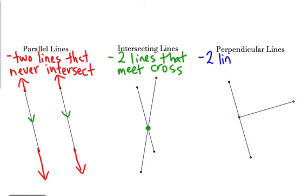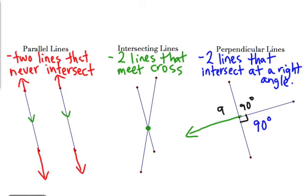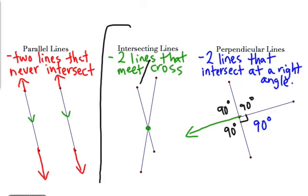Perpendicular lines are two lines that intersect, like intersecting lines, but they intersect at a right angle — 90 degrees. They'll often show a little square there so you know it meets at a right angle. Every angle around that intersection is 90 degrees if they're perpendicular. So: parallel means they never meet; intersecting means they meet or cross; perpendicular means they intersect specifically at a right angle. Perpendicular is a more specific type of intersecting.